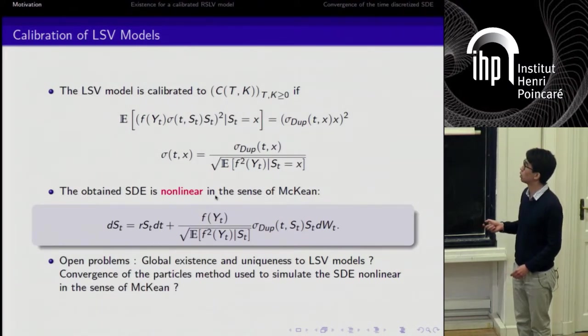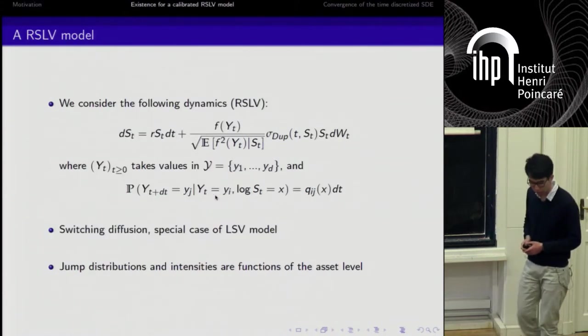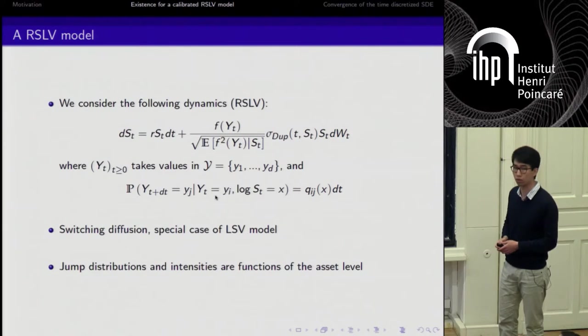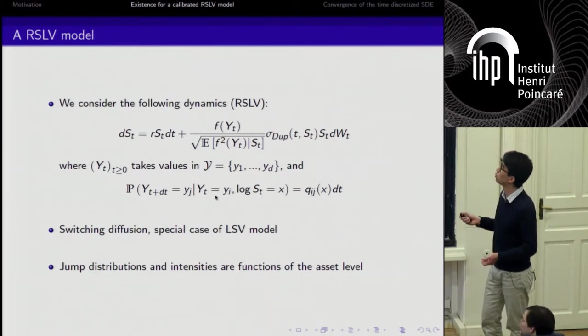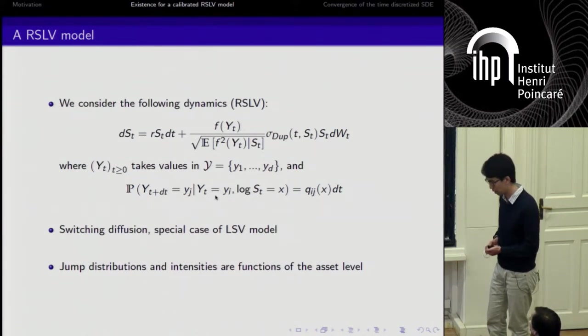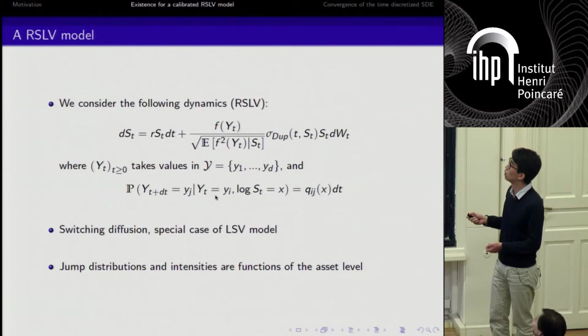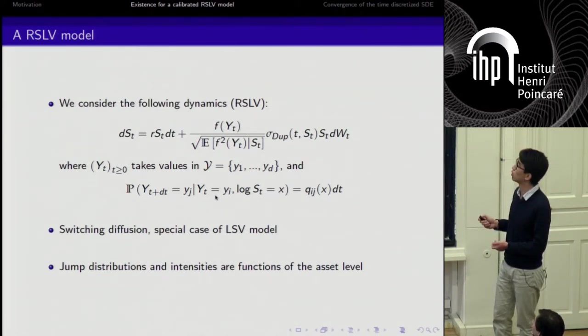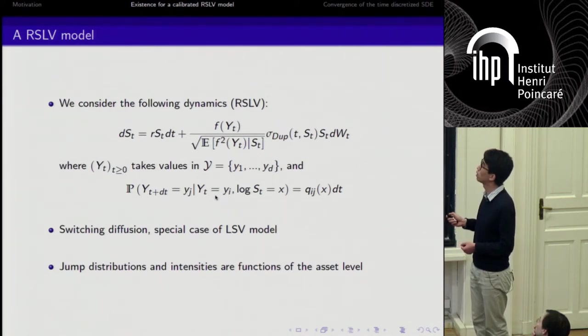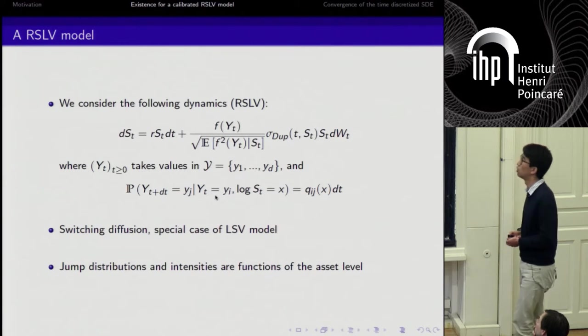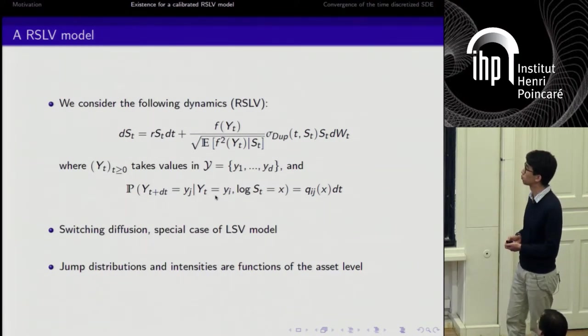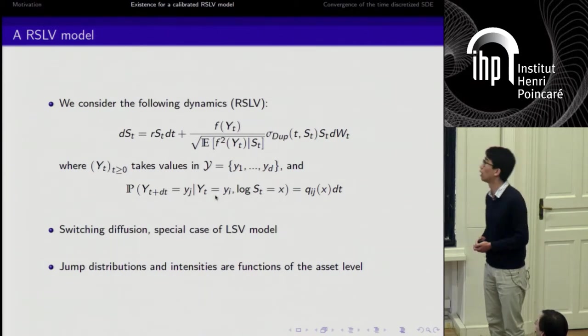I will talk about some advances in those open problems, some elements of answer. On the first question, we will establish existence for a special case of the LSV model. What is this special case? We just specify the dynamics of Y_t, and what we have here is that we restrict Y_t to be a jump process that only takes a finite number of values, y_1 through y_d, so d values at most. The probability to jump from y_i to y_j, knowing that the level of the spot is x, is given by the jump intensity q_ij. This is what we call a switching diffusion because Y_t is piecewise constant and is a special case of the LSV model. Moreover, the jump distribution and intensities are functions of the asset level.